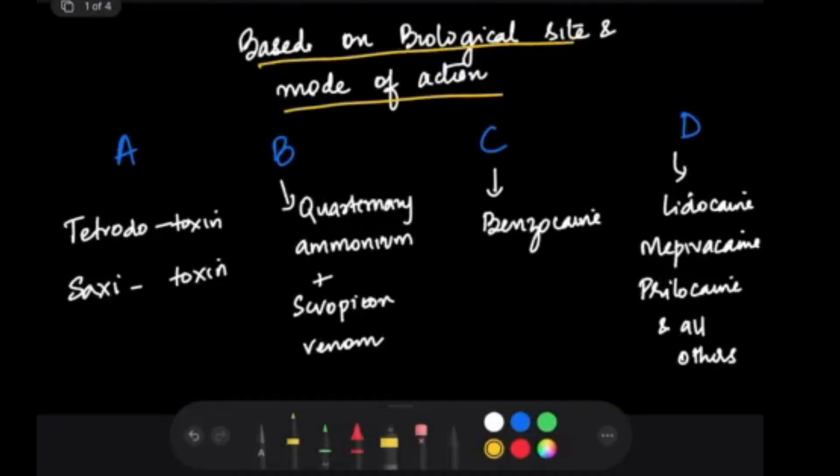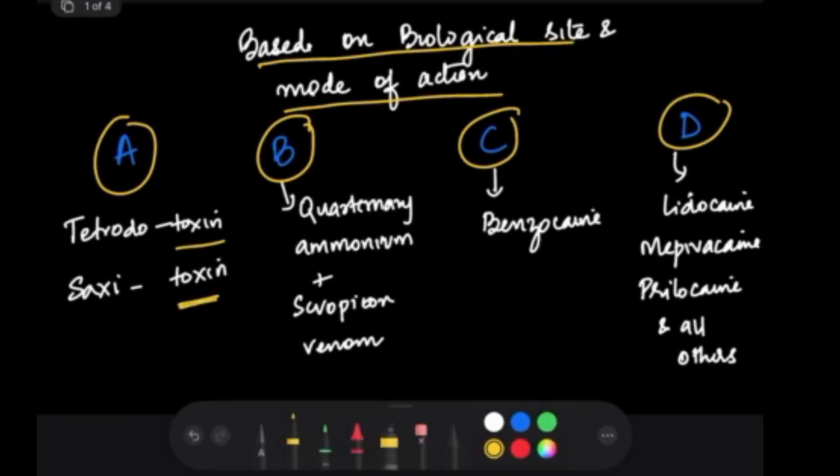There is another classification based on the biological site and mode of action, classified into A, B, C, and D. A has tetrodotoxin and saxitoxin, anything that ends with toxin. B is quaternary ammonium plus scorpion venom. C is benzocaine. And D is lidocaine, mepivacaine, prilocaine and all of this. The drugs that we are talking about, all three—lidocaine, articaine, and bupivacaine—they all come under class D.